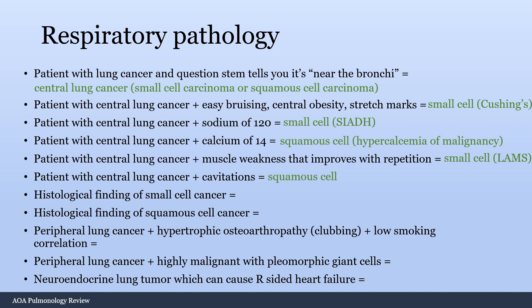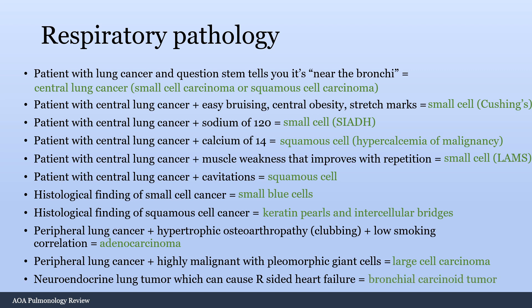Histological finding of small cell cancer: small blue cells, chromogranin positive, synaptophysin positive. Histological finding of squamous cell cancer: keratin pearls and intercellular bridges. Peripheral lung cancer with hypertrophic osteoarthropathy (clubbing) and low smoking correlation — this is the most common lung cancer: adenocarcinoma of the lung. Peripheral lung cancer that is highly malignant with pleomorphic giant cells — that is large cell carcinoma. A neuroendocrine lung tumor that can cause right-sided heart failure — that's bronchial carcinoid tumor.